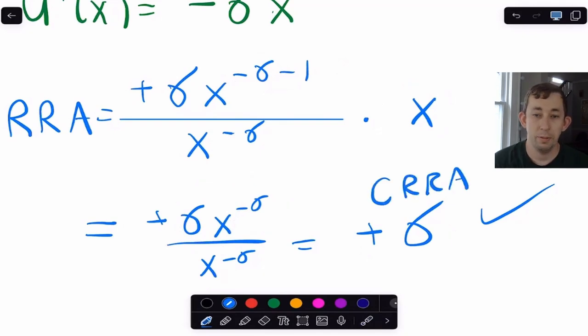The reason this is useful is that when you're plugging this utility function into a macro model, you instantly know their risk aversion. You don't have to go through and calculate it, because you know that this utility function, because it's CRRA, means our risk aversion is just sigma.